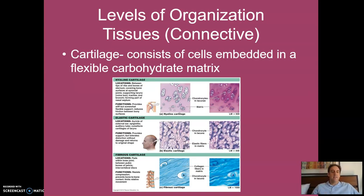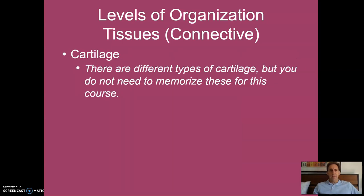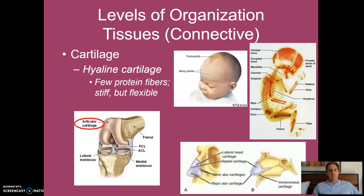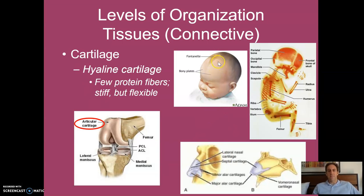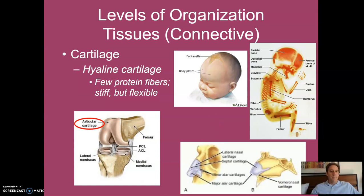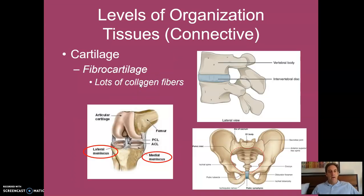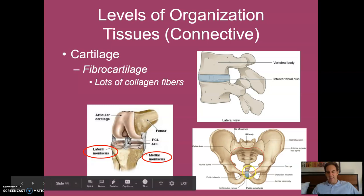Cartilage consists of cells embedded in a flexible carbohydrate matrix — the key property being flexibility. The soft spot of a baby is cartilage, filling the gaps between the skull bones that haven't fused yet. Your nose and ears are cartilage. You have cartilage at the ends of your bones, between your vertebrae, and even at your hips.